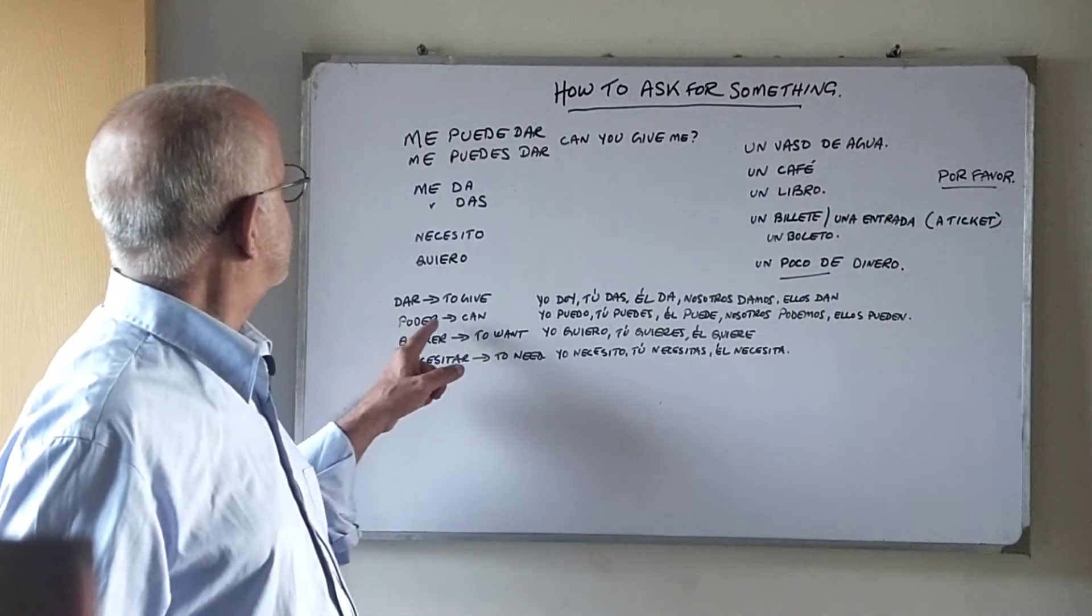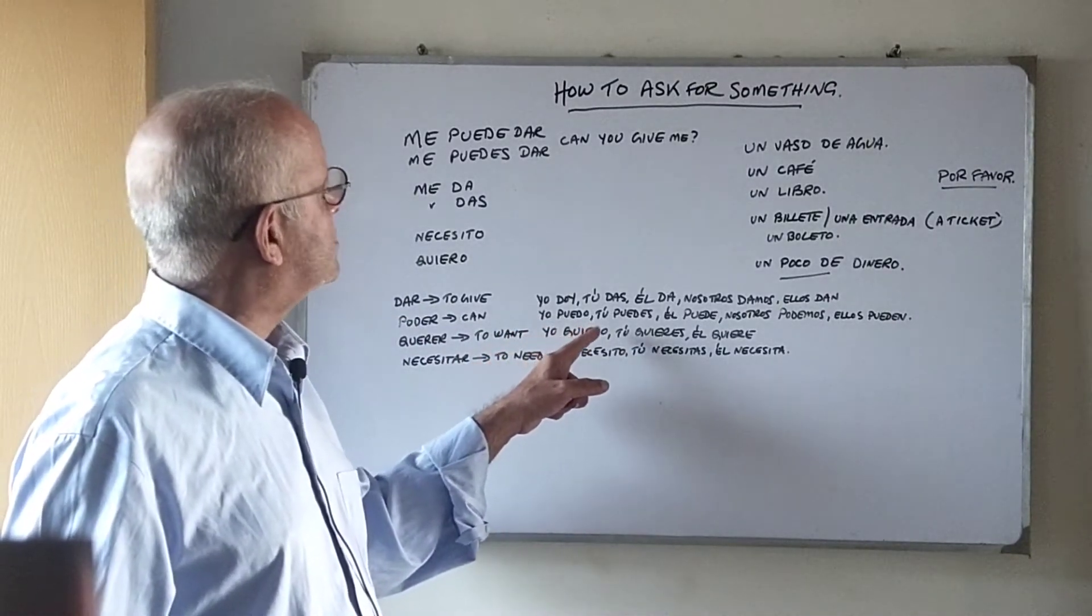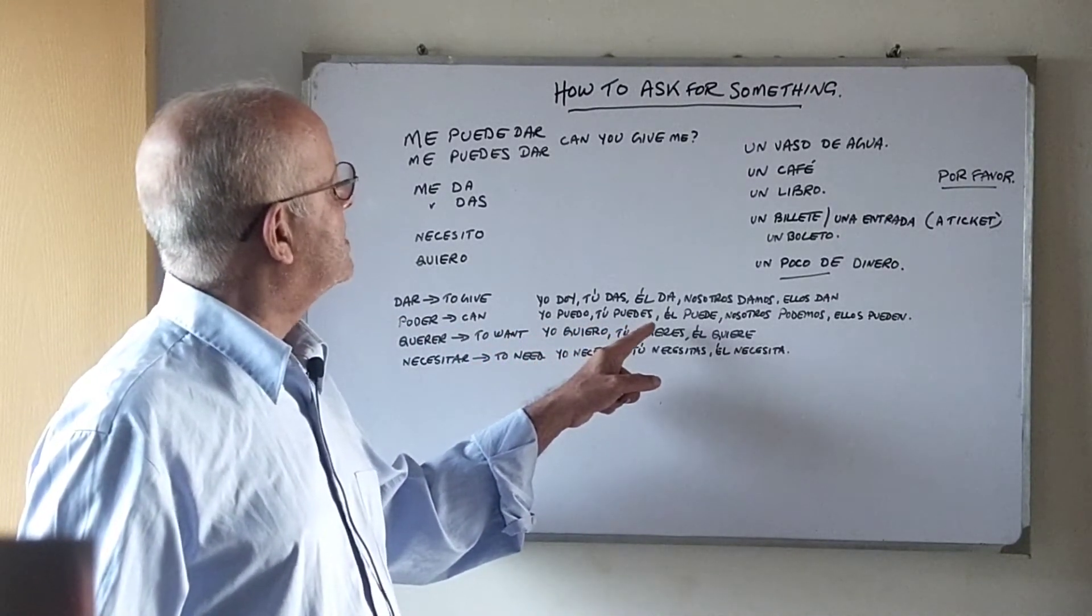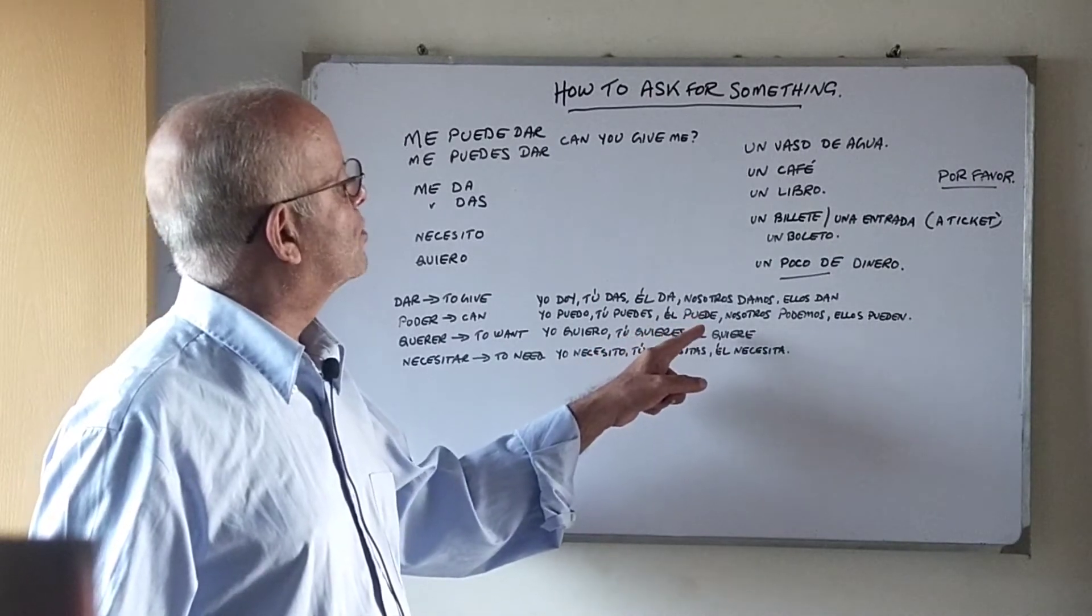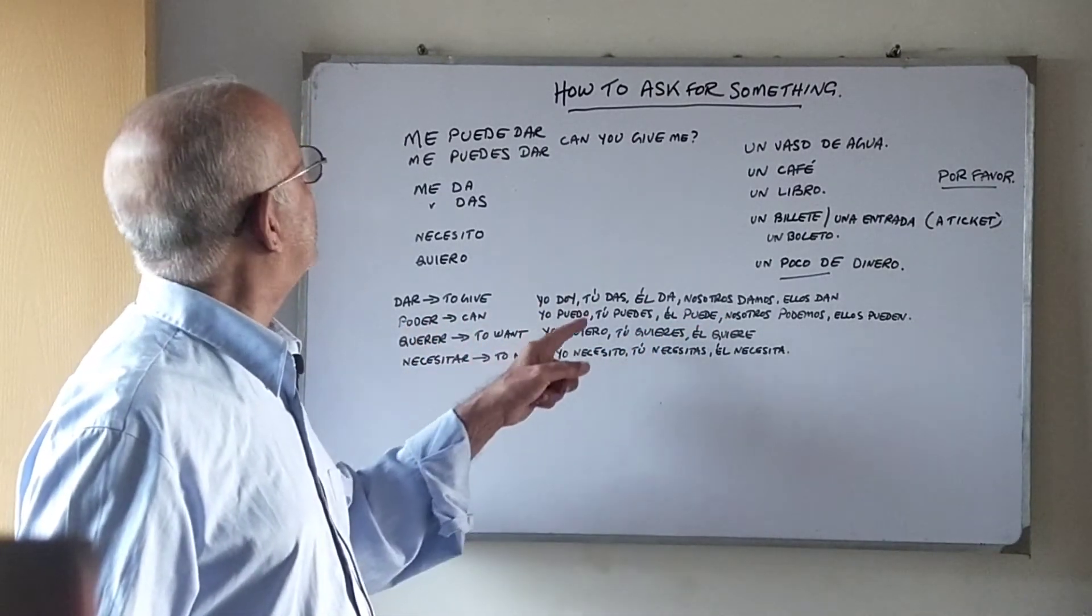Poder is the verb can conjugated into yo puedo, I can, tu puedes, you can, el puede, he can, nosotros podemos and ellos pueden. So we can use it with puedes or puede.